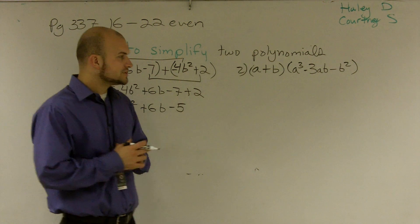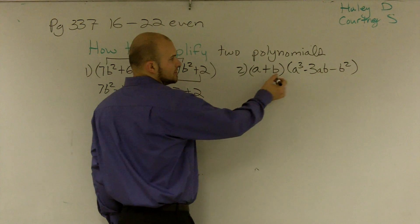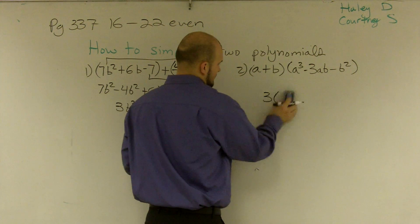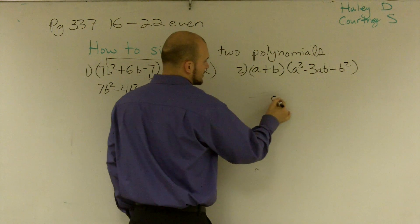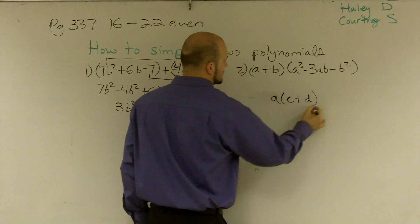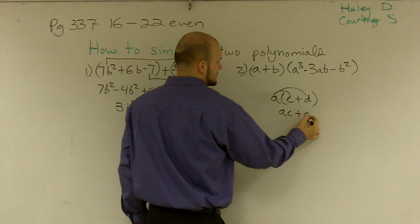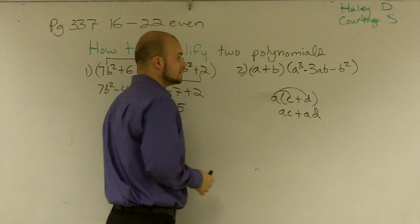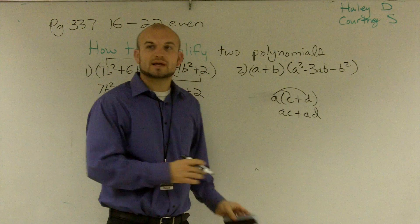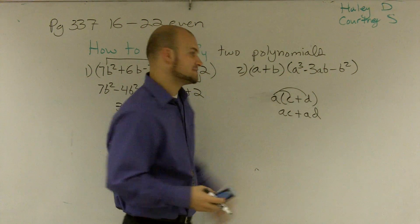Now on multiplication, we have to use some of our rules of the distributive property. If you remember, a quick rule of the distributive property is you have to multiply a times c plus a times d. Now what we have is a binomial multiplied by a trinomial, so we're going to have to multiply each term inside our binomial times our trinomial.